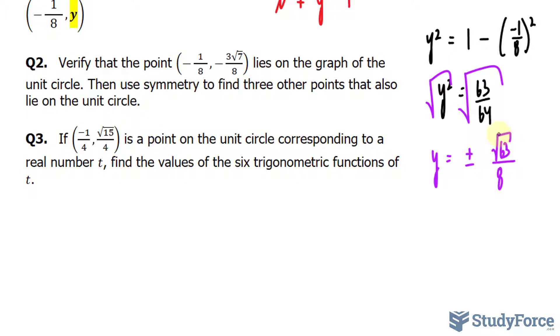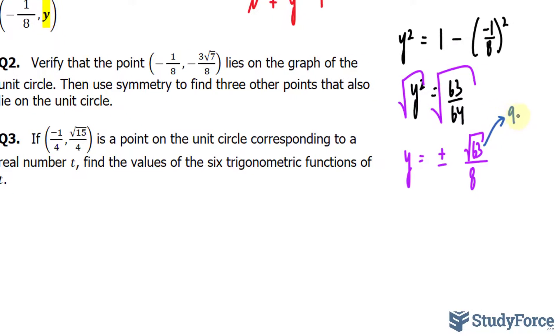The square root of 63, remember 63 can be broken down into its factors, 9 and 7. 9 is a perfect square. It becomes 3. The square root of 7 is not a perfect square, so we just leave it, and we have that over 8.